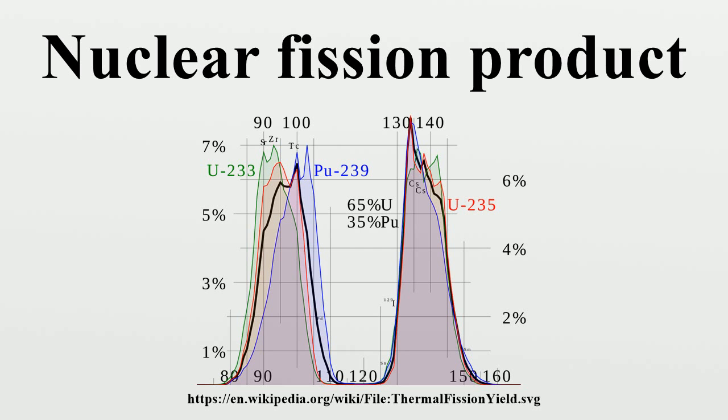While after about two or three years the largest share is taken by 144-Ce, 144-Pr, 106-Ru, 106-Rh and 147-Pm. Later 90-Sr and 137-Cs are the main radioisotopes, being succeeded by 99-Tc.